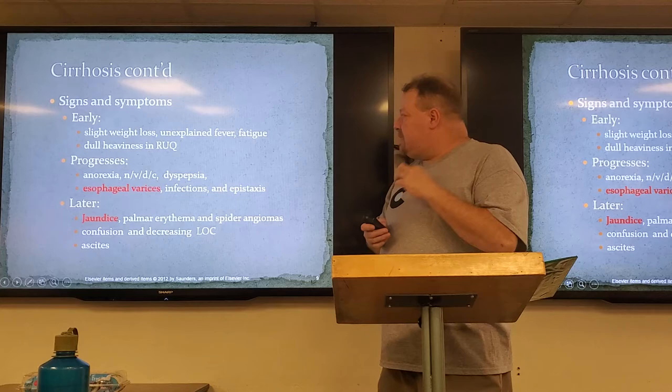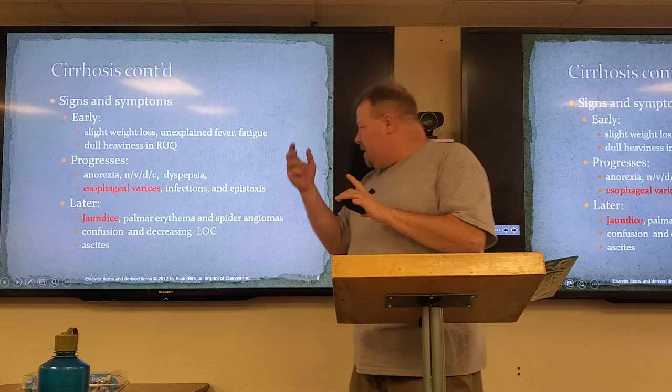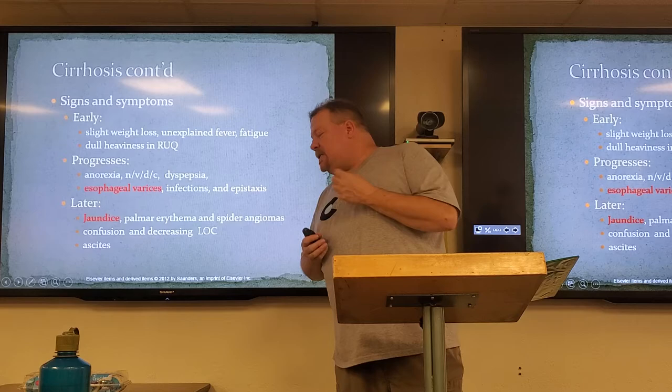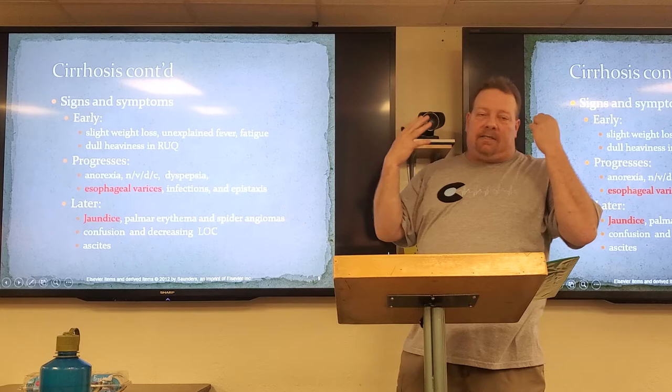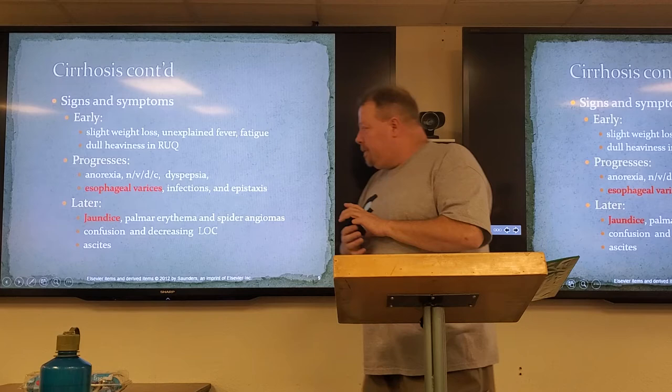Later signs include infections, epistaxis, and jaundice. Palmar erythema and spider angiomas around the abdomen. Confusion and decreasing level of consciousness — this is due to the inability to process ammonia and increased hepatic encephalopathy. And of course it causes ascites as well.